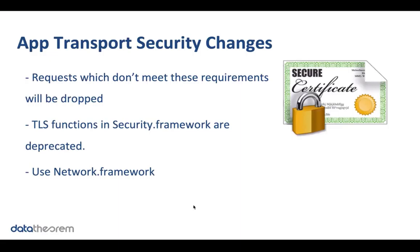Apple previously offered a framework called Security, which allowed developers to manipulate low-level functionality and configurations for TLS connections. Apple is now saying with iOS 13 that you should no longer use these APIs. Instead, they've introduced a new framework called the Network framework, which is a modern reimplementation of this API. If you need fine-grained control over TLS connections, you should be migrating to the new Network framework.